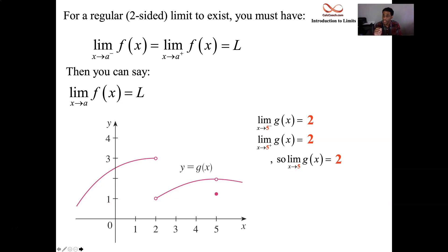At 5, not only does the function have a hole in it, but it has been later defined to be something else. We don't care though. All we care is that we're headed to 2 from the left. We're headed to 2 from the right. So, the limit is 2. Let's move on to x equals 2.